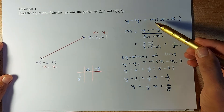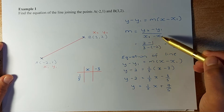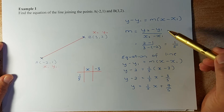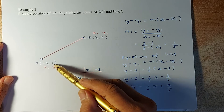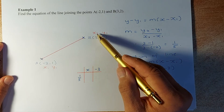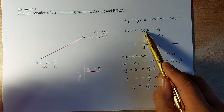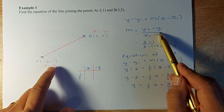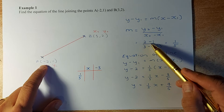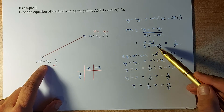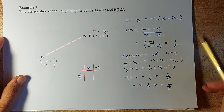If m is not given, we have to find the gradient. The gradient formula is (y2 minus y1) divided by (x2 minus x1). So we label the coordinates first: for A, x1 is -2 and y1 is 1. For B, x2 is 3 and y2 is 2. Once we've done that, we calculate the gradient: y2 minus y1 is 2 minus 1, and x2 minus x1 is 3 minus (-2), which is 3 plus 2 equals 5. So the gradient is 1 over 5.